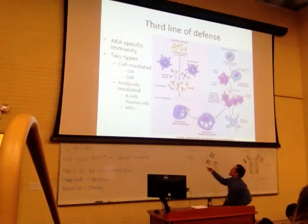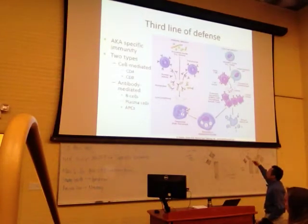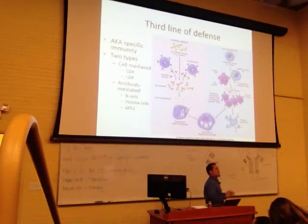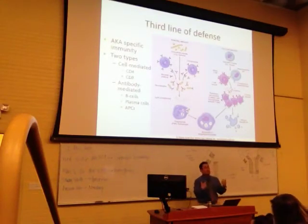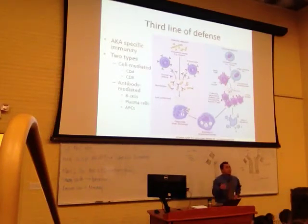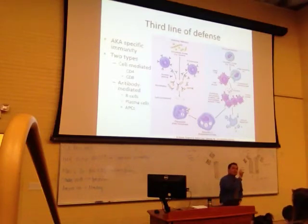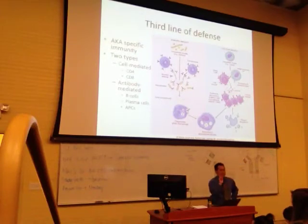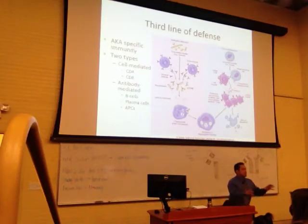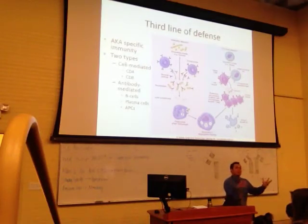Our second category is called humoral, also known as antibody-mediated. These are cells that manufacture and crank out antibodies as a product — that's a protein. Unlike their counterpart, the T cells, which actually attack, B cells crank out antibodies that help propagate a reaction or signal. They can stimulate phagocytosis, neutralization, and an inflammatory response.